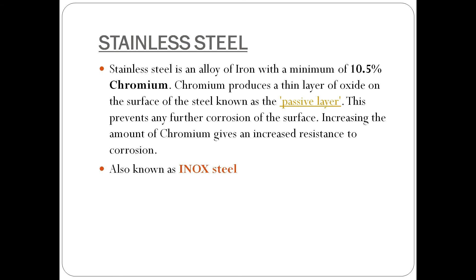Now, stainless steel is an alloy of iron — and since it is steel, it has a carbon percentage — but it also contains a minimum of around 10 to 11 percent chromium. The addition of chromium produces a thin layer of oxide on the surface, known as the passive layer, which prevents further corrosion. Increasing chromium content increases corrosion resistance further. Stainless steel is designed to protect against oxidation, which is why it is also called inox steel — inox standing for 'inoxidable.'